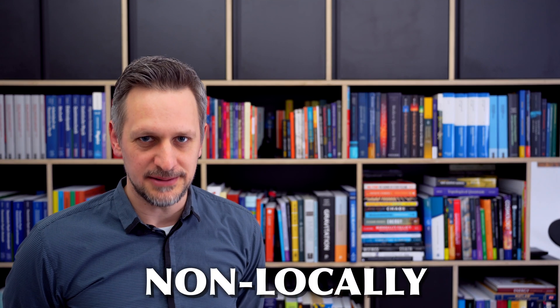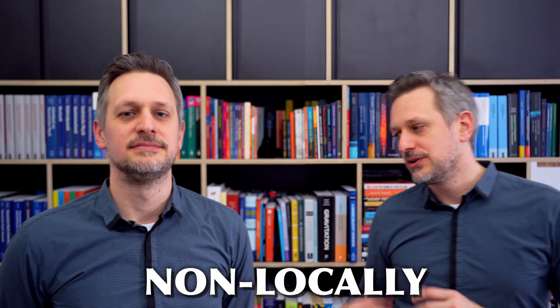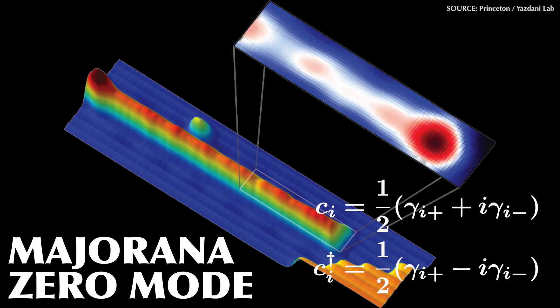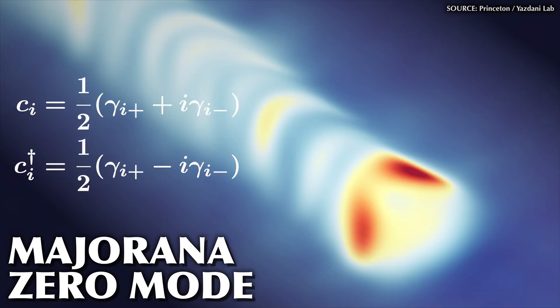The more interesting feature for quantum computing is that a pair of Majorana zero-modes can be combined into a single quasi-particle, and this can be used to store information non-locally — meaning the information is not stored at either mode, but in the relation between them. This is an example of a topological quantum state, because the quantum information is stored in a global property of the system, not in singular particles within it. This makes the state very resistant to noise, because the noise would have to apply to both Majorana modes at the same time to affect them.